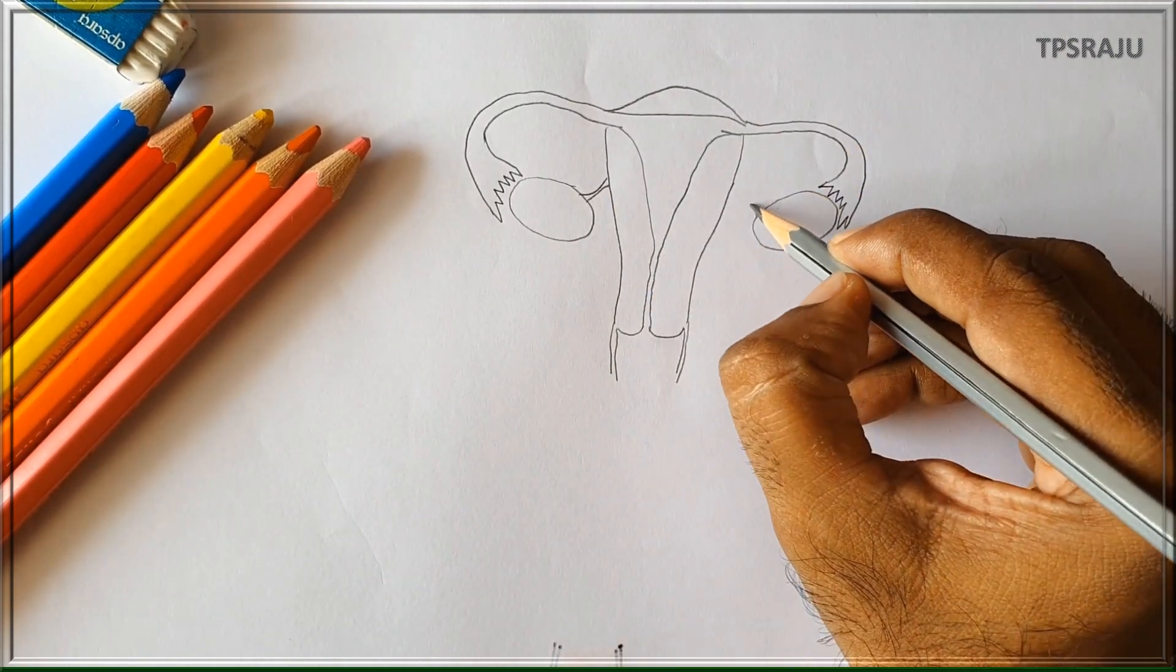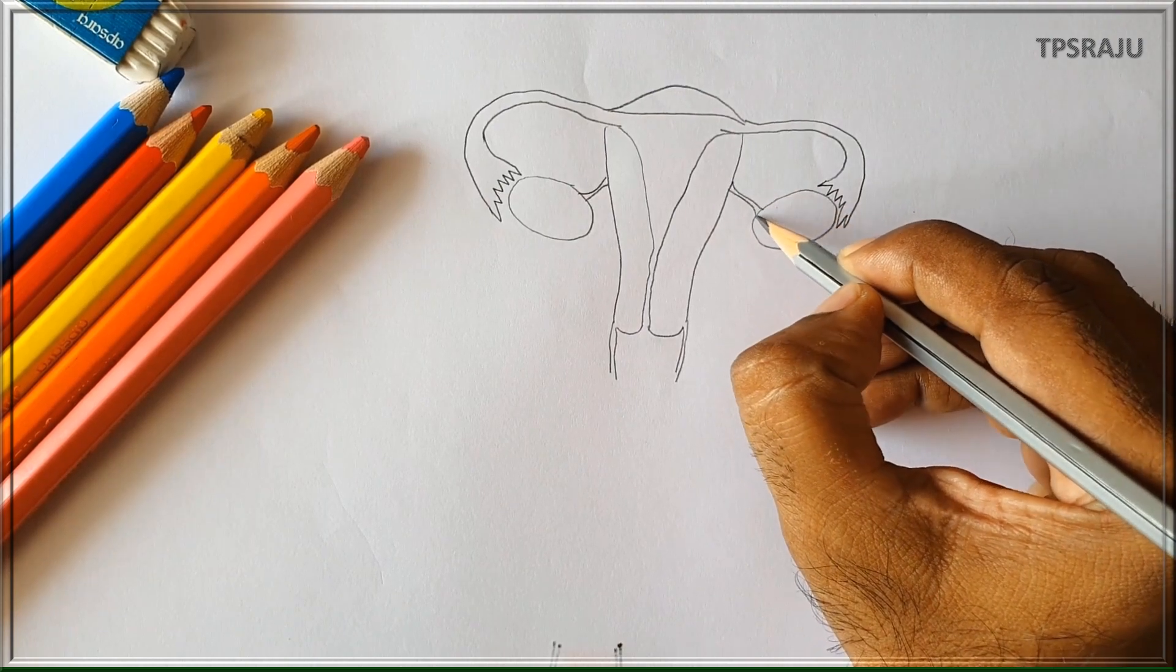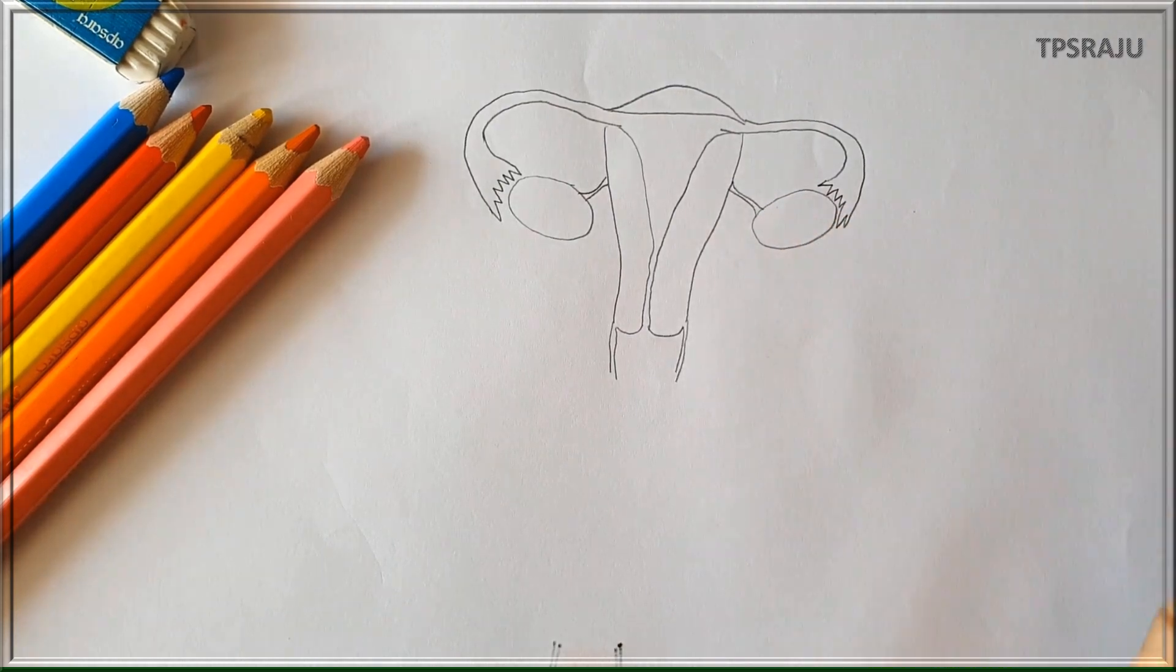Ovaries are attached to the walls of the uterus by connective tissue. Now the diagram is completed. For better appearance, again draw the diagram with black pen.